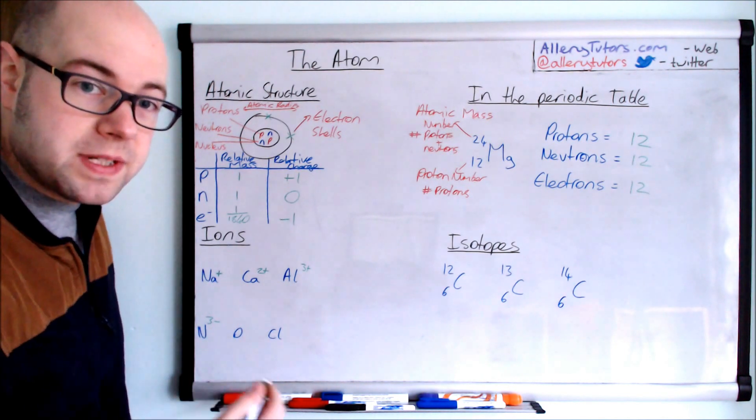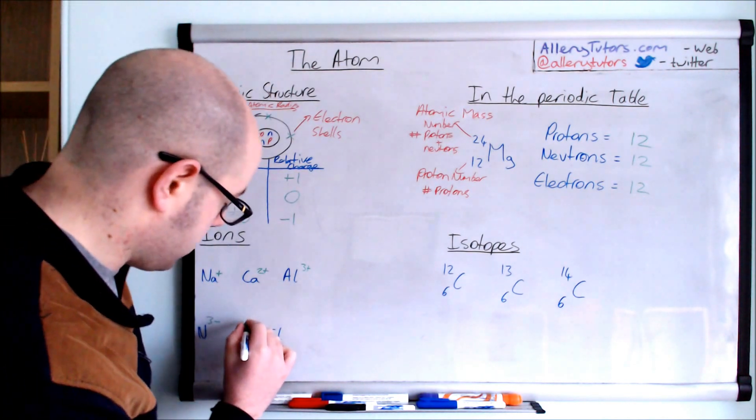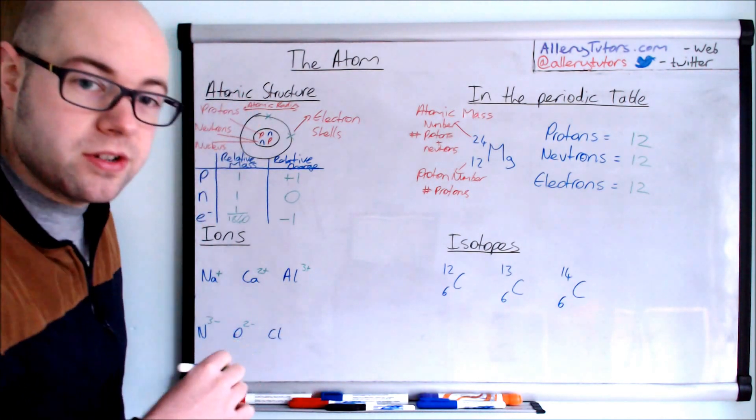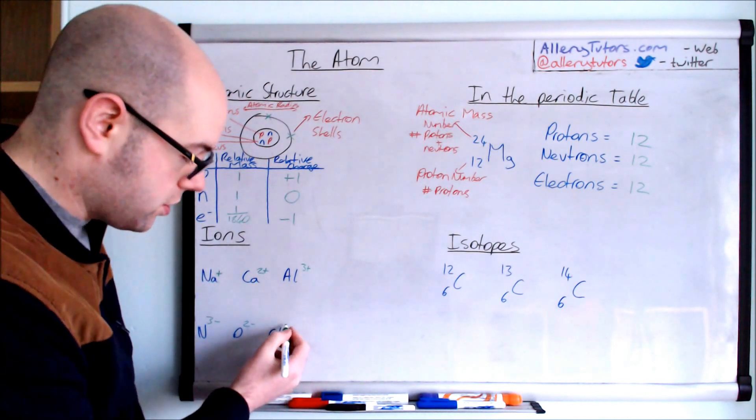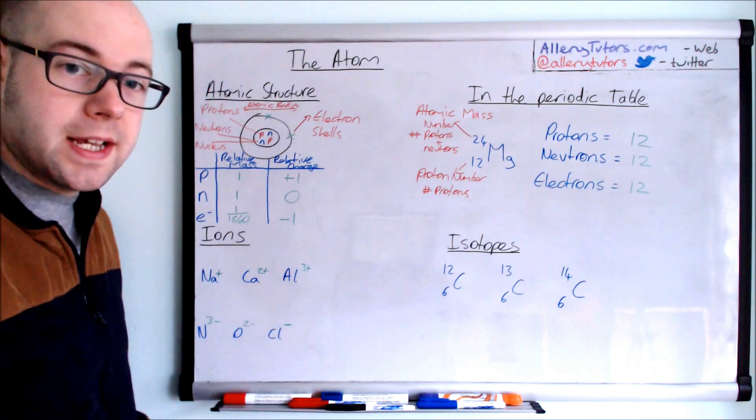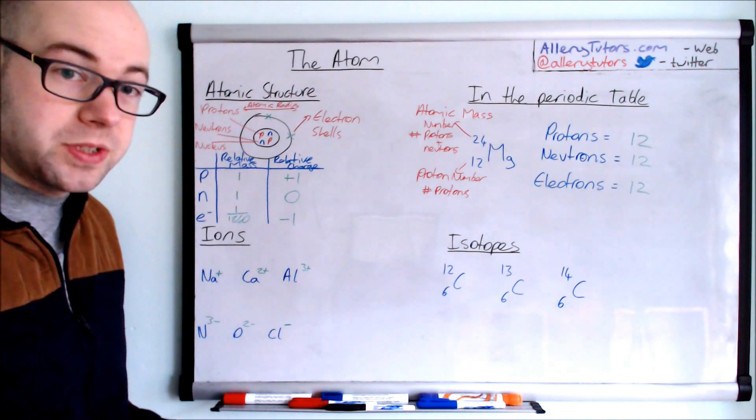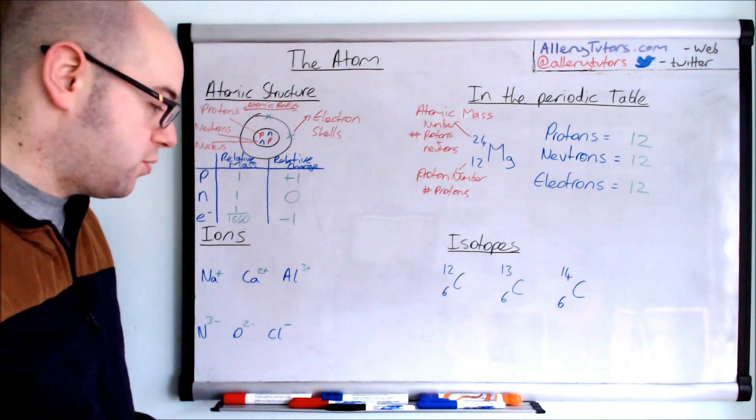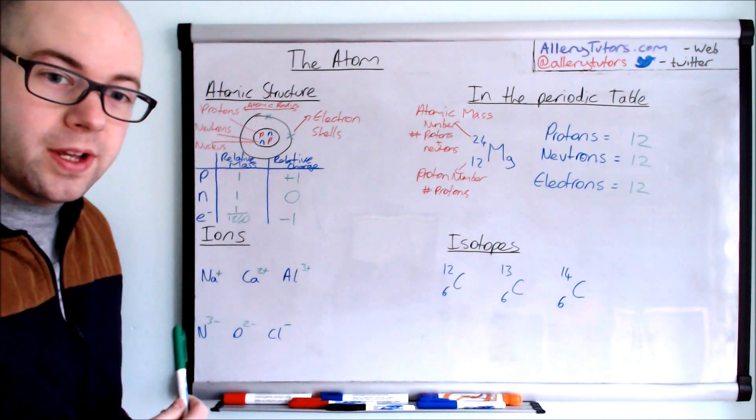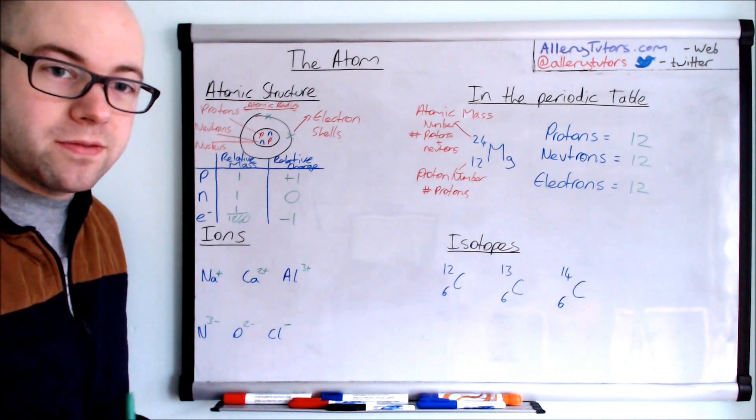Oxygen's in group six. It forms two minus charges. And chlorine is in group seven. And therefore has seven electrons in the outer shell. It just needs to gain one electron to get its full shell of electrons. So it forms Cl minus ions. So these are pretty important. You've got to make sure you know your ions and where they fit in the groups.